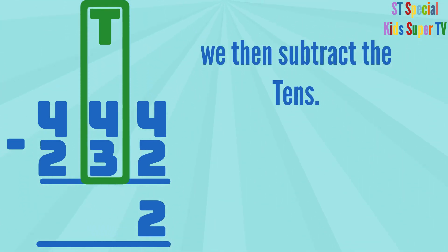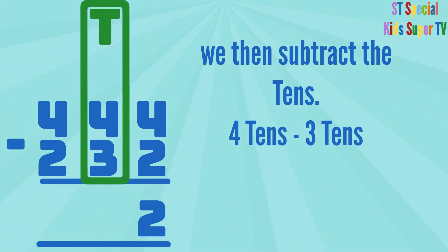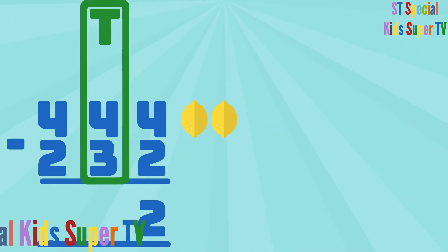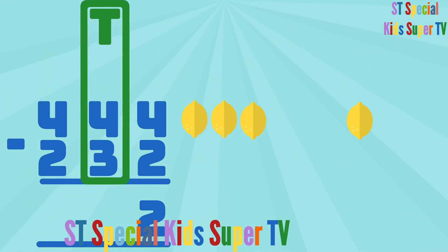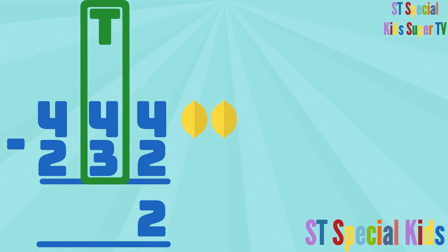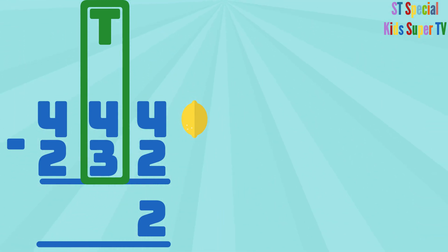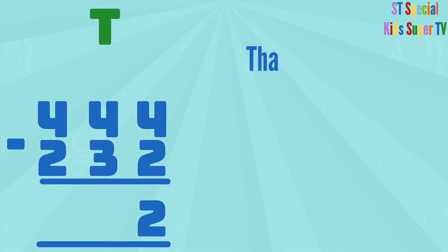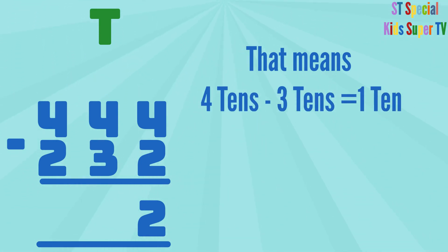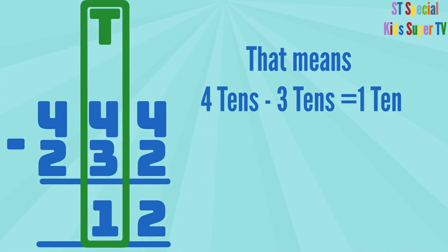We then subtract the tens: 4 tens minus 3 tens. 1, 2, 3, 4 lemons minus 1, 2, 3 lemons equals 1 lemon. That means 4 tens minus 3 tens equals 1 ten. So we write the 1 under the tens column.